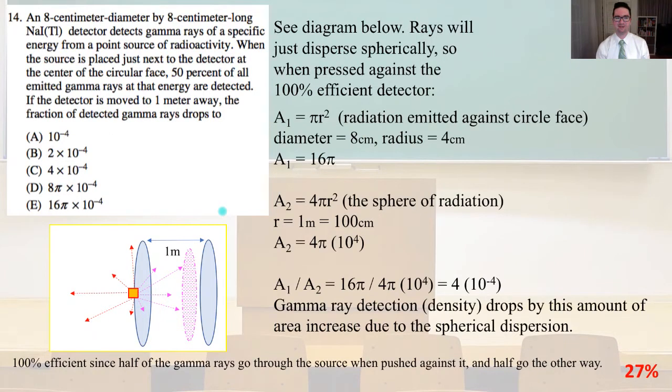Number 14, an 8 centimeter diameter by 8 centimeter long NAI detector detects gamma rays of a specific energy from a point source of radioactivity. When the source is placed just next to the detector at the center of the circular face, 50% of all emitted gamma rays at the energy are detected. If the detector is moved to 1 meter away, the fraction of detected gamma rays drops to. Let me refer you to the diagram below. Rays will just disperse spherically. When pressed against the 100% efficient detector, since half of the gamma rays go through the source when pushed against it, half go the other way.